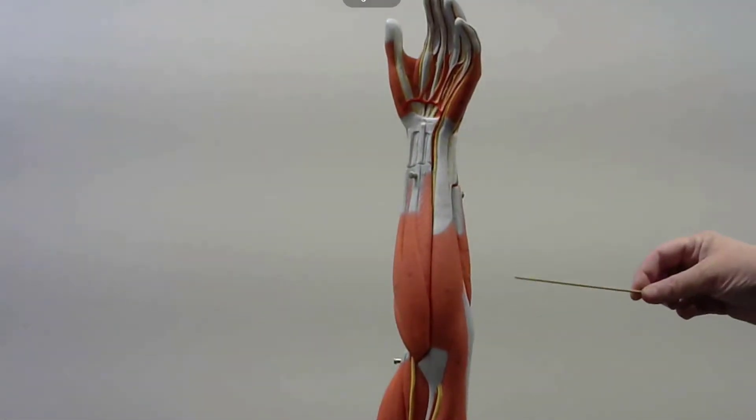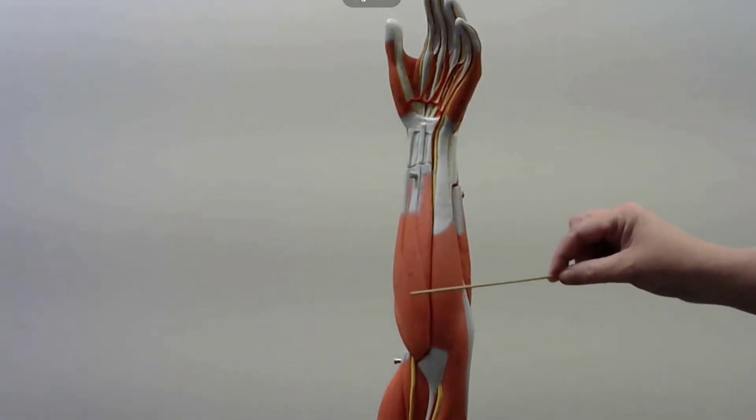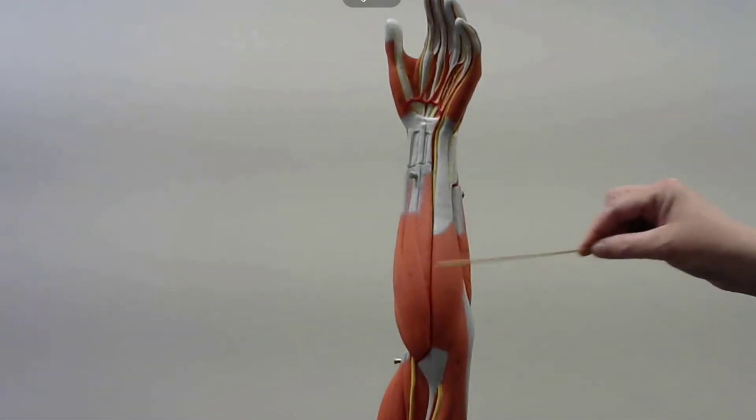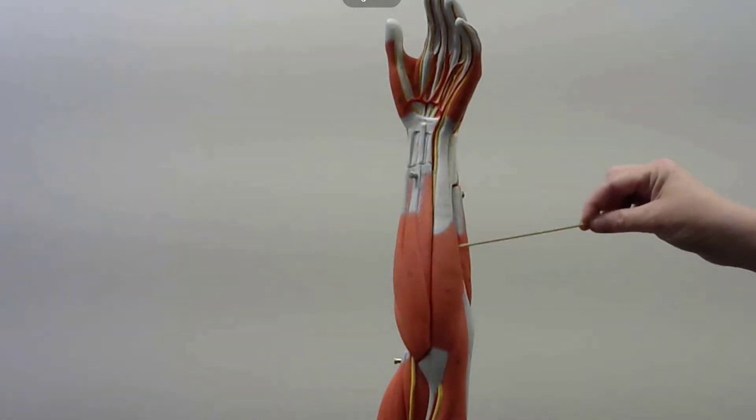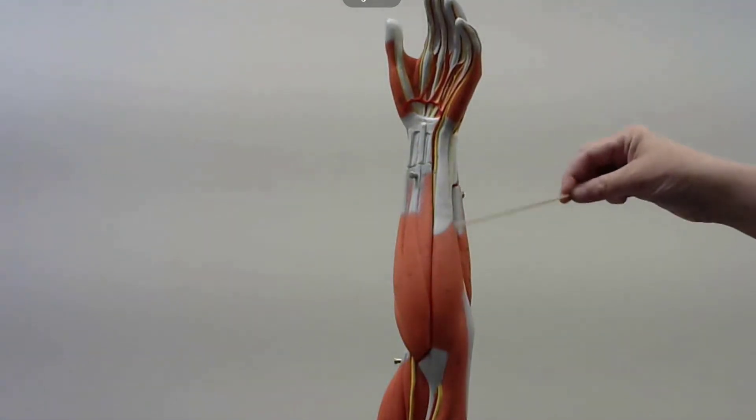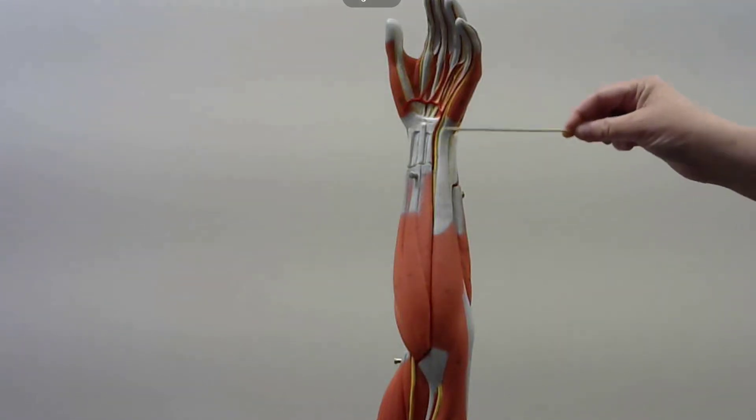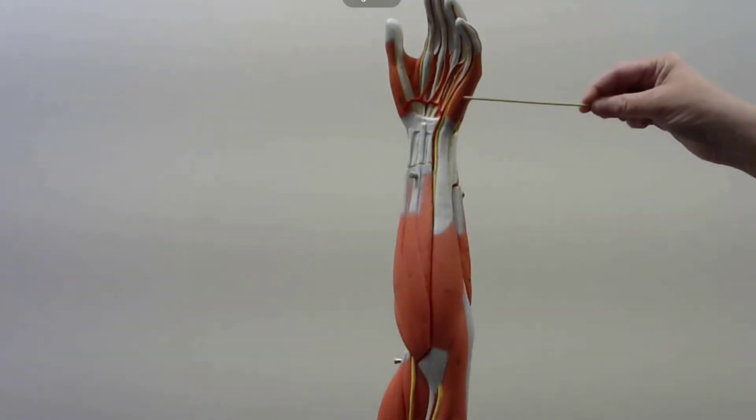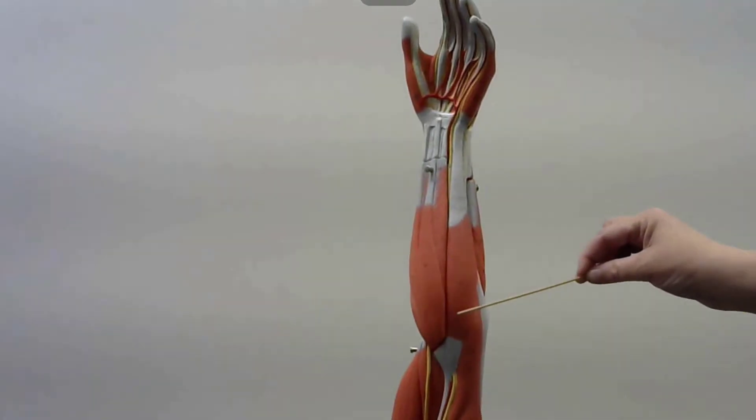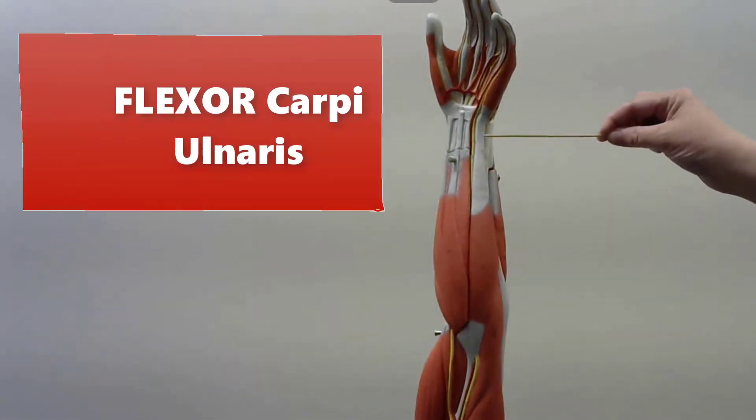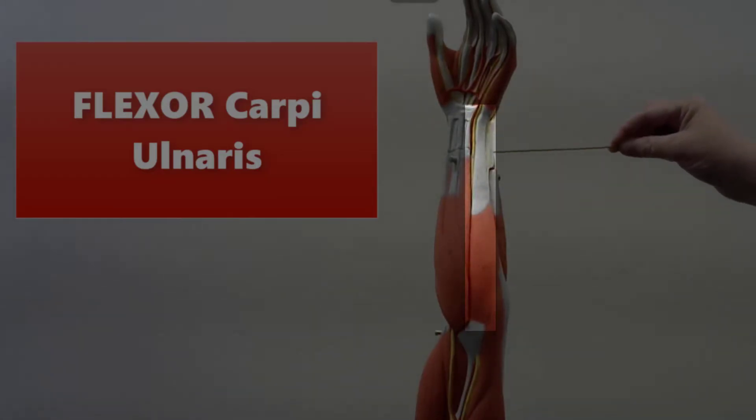Now we are on the anterior portion of the lower arm, so here's where our flexors would be. This, if you follow this up, is a flexor. I know it's a flexor because it's anterior and it's on the ulnar side, the side of the pinky. So this is going to be your flexor carpi ulnaris.